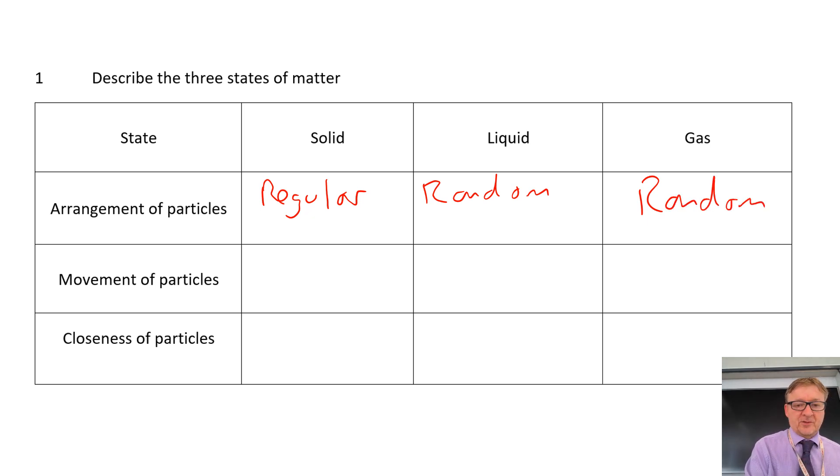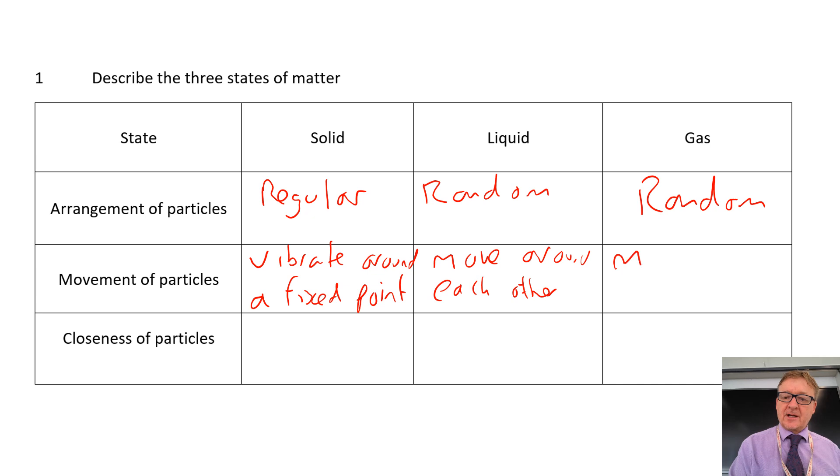The movement of particles. In a solid, they vibrate around a fixed point. I might actually put a line across my F. Liquids, what they do is they move around each other. They are slipping and sliding over the top of each other. Gas, the movement of particles, is they move quickly, randomly, in all directions.